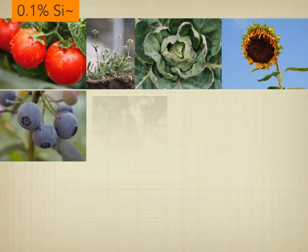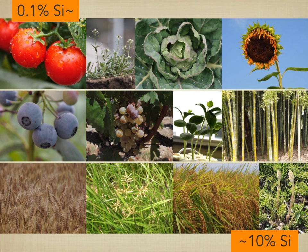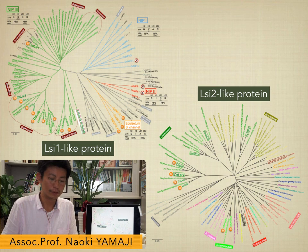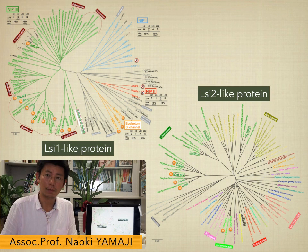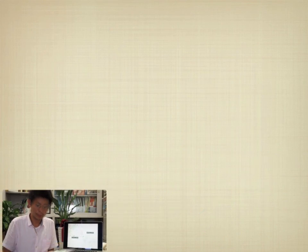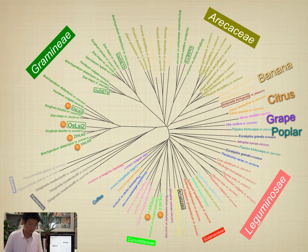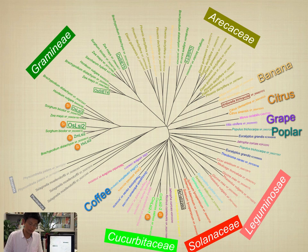Another interesting aspect of silicon is that there is a wide variation in the concentration of silicon in above-ground tissues among different plant species, ranging from 0.1% to 10% of dry weight. These differences have been attributed to the capacity of the roots to take up silicon. A search of silicon transporter genes in public databases shows that, in flowering plants, genes encoding LSI-1-like and LSI-2-like transporters are found in both monocots and dicots, such as grass, pan, banana, citrus, grape, poplar, bean, tomato, pumpkin, and coffee. However, the exact role of these transporters in silicon uptake remains to be examined in the future.